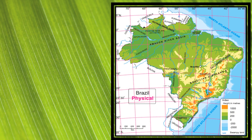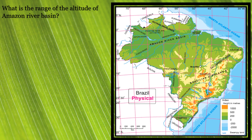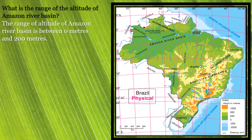We now move on to figure 3.2 on page number 15 of our textbook, which shows the physical map of Brazil. The first question: what is the range of the altitude of the Amazon river basin? The Amazon river basin is shown in dark green, and referring to the key, the range of altitude of the Amazon river basin is between 0 meters and 200 meters.